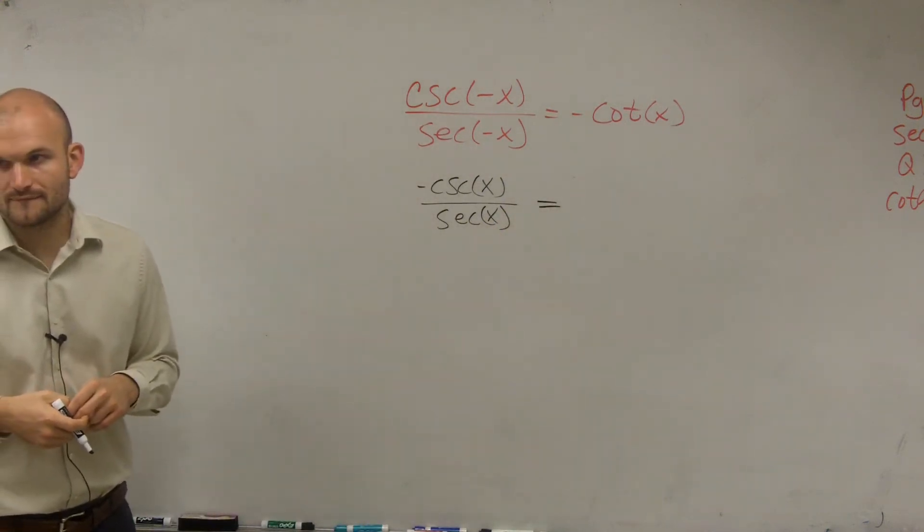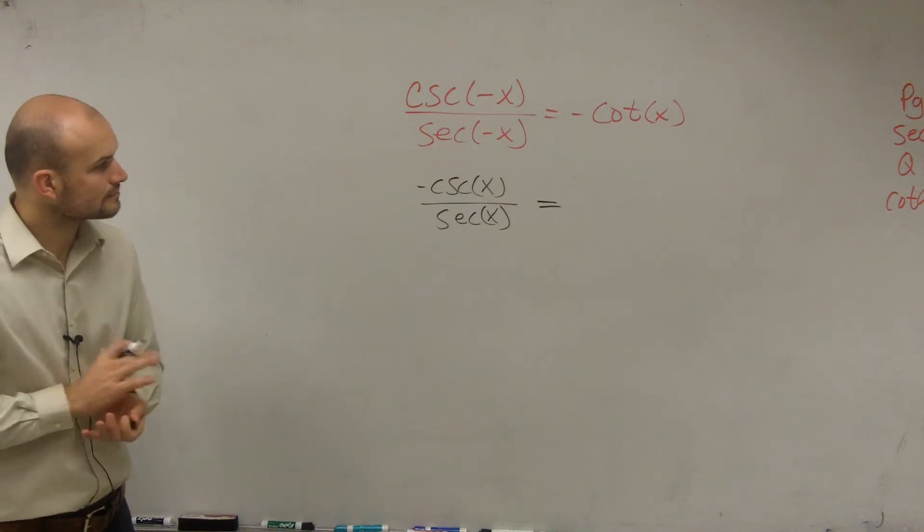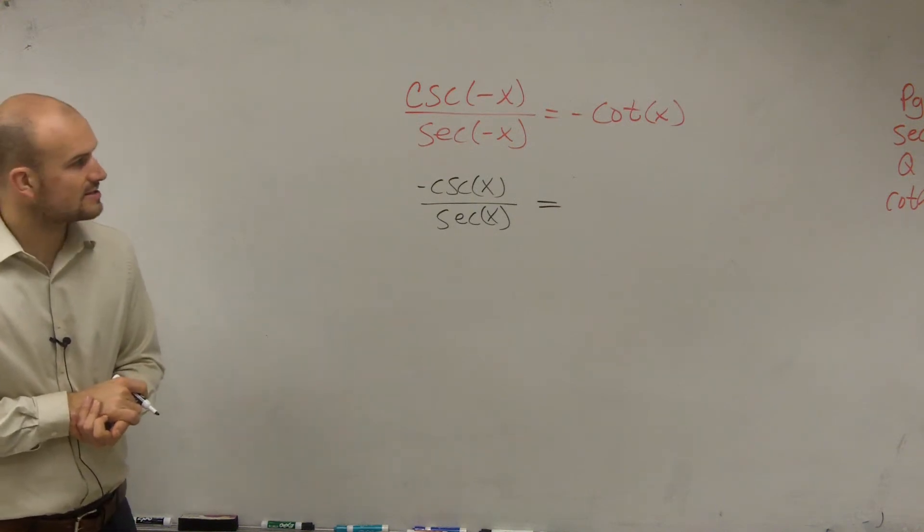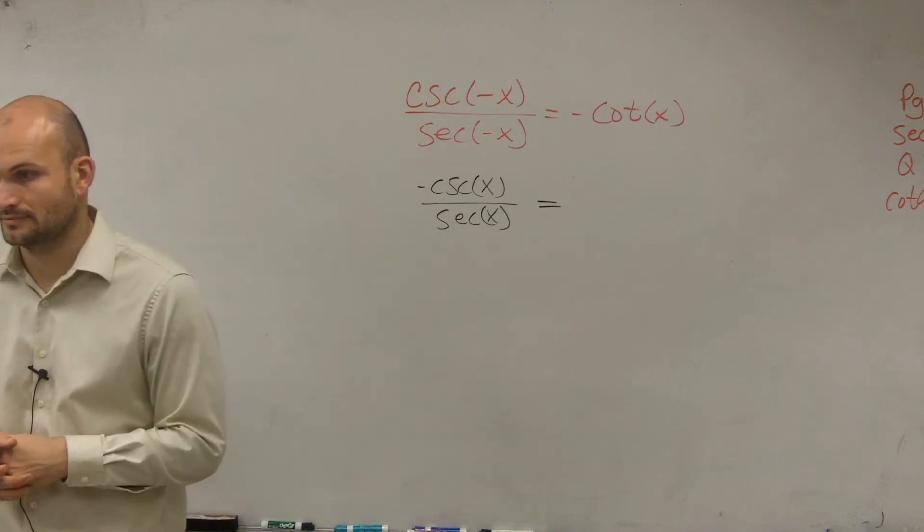Does everybody follow me with that? This is number 29. So if I have negative cosecant of x divided by secant of x, and we want it to look like negative cotangent of x, all right?